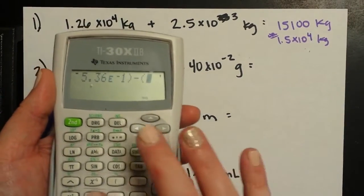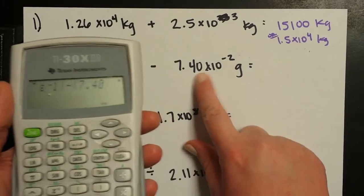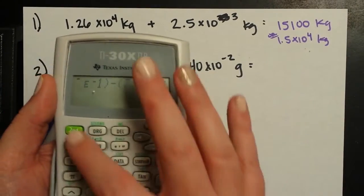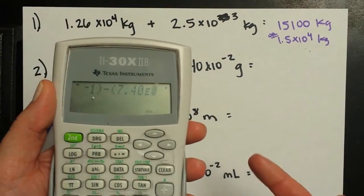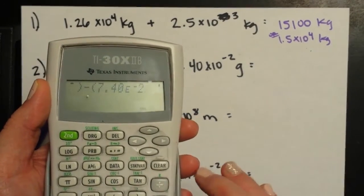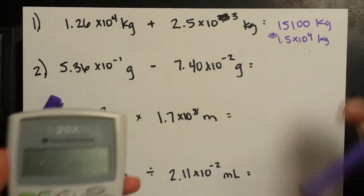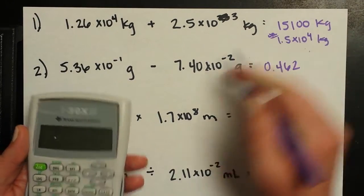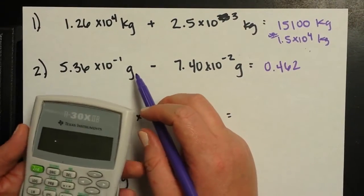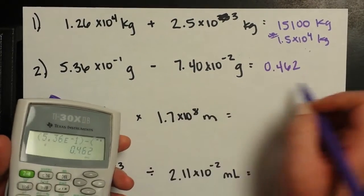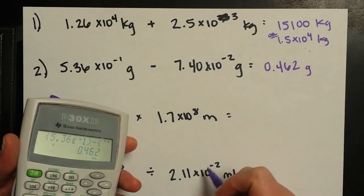I'm going to put my coefficient 7.40 times 10 to the negative 2 for my exponent. That's going to give me 0.462. X minus X would be X still. So grams minus grams is also grams.